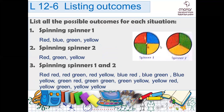In order not to forget any outcome, in this example we started with spinner one: red, blue, yellow, green. Then in spinner two: red, green, yellow. So I started red with red, red with green, red with yellow. Then I switched to blue: blue with red, blue with green, blue with yellow. Then green: green with red, green with green, green with yellow. And the last one — yellow: yellow with red, yellow with green, yellow with yellow.